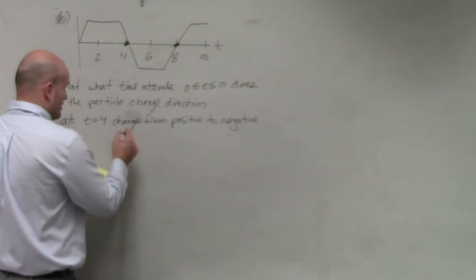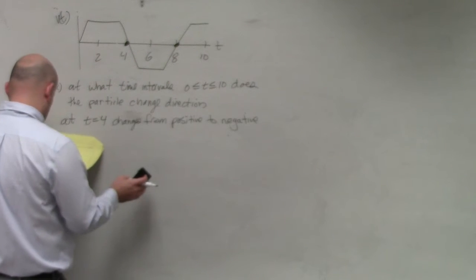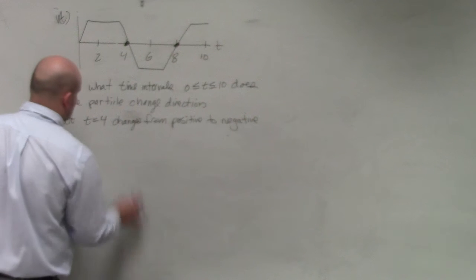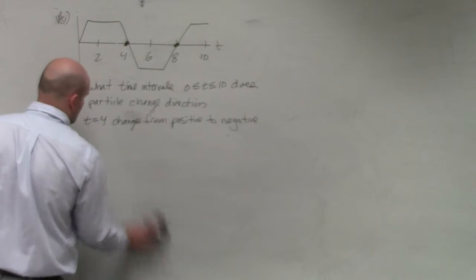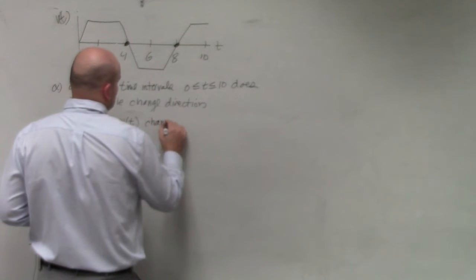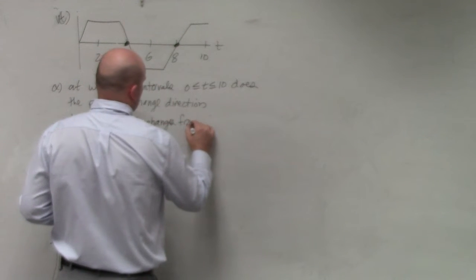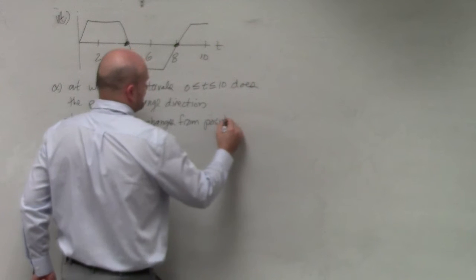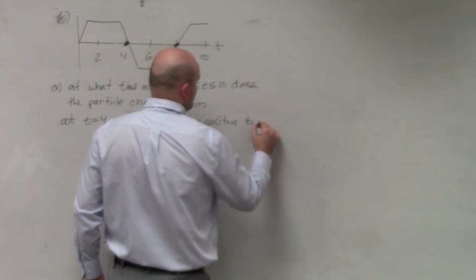At t equals 4, I should write in my function, my v sub t changes from positive to negative.